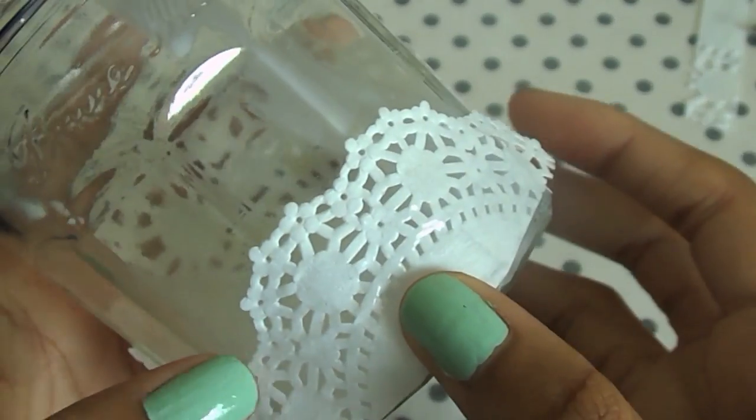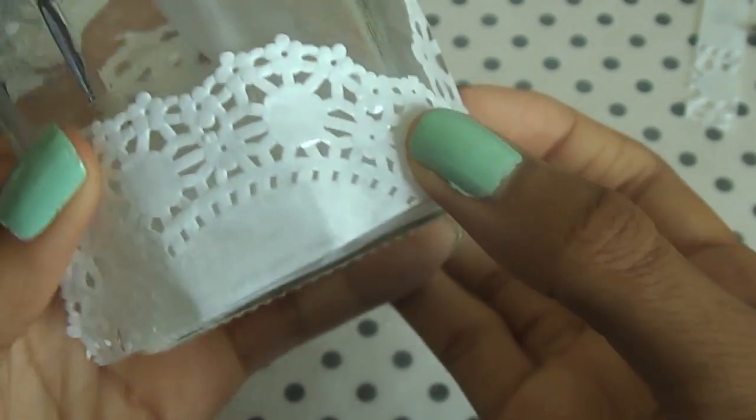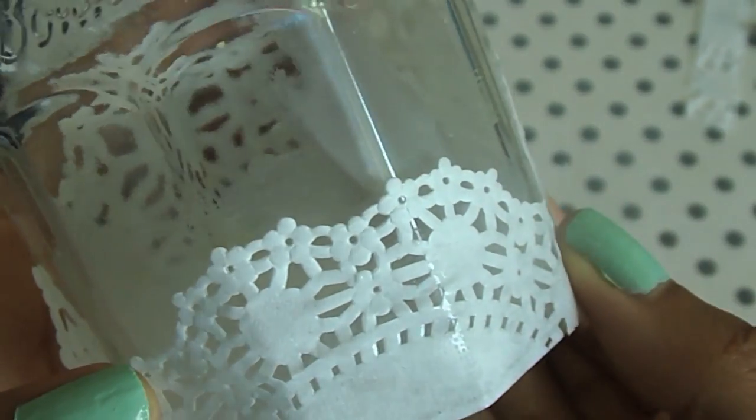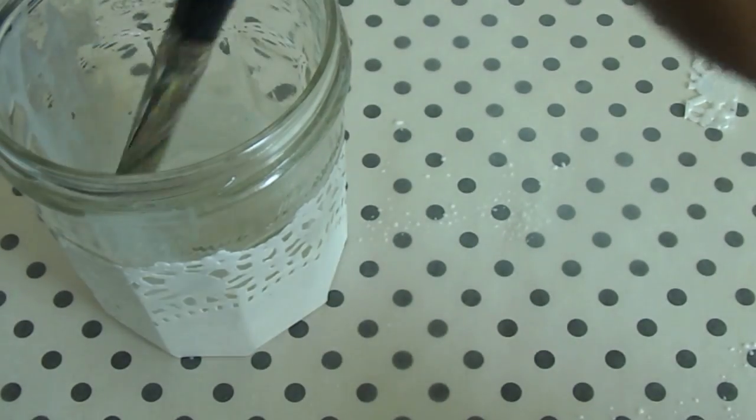So then you just want to do the same thing with your smaller one. And then take a little bit more of your glue and water mixture and just brush it on the top of the doily.